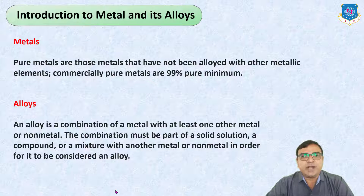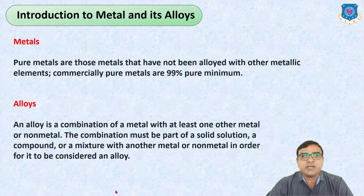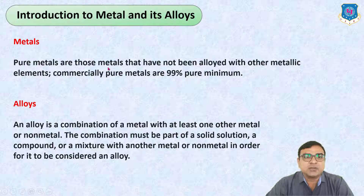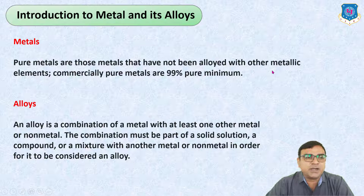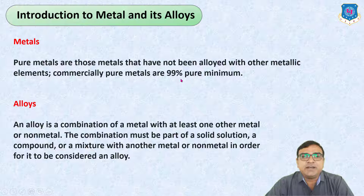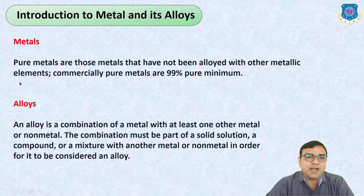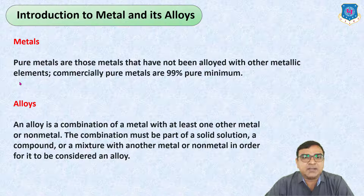Introduction to metal and its alloys. First of all we will see what is the difference between metals and its alloys. Pure metals are those metals that have not been alloyed with other metallic elements. Commercially, pure metals are 99% pure metal — like copper, aluminum, iron, zinc — all are known as pure metals.